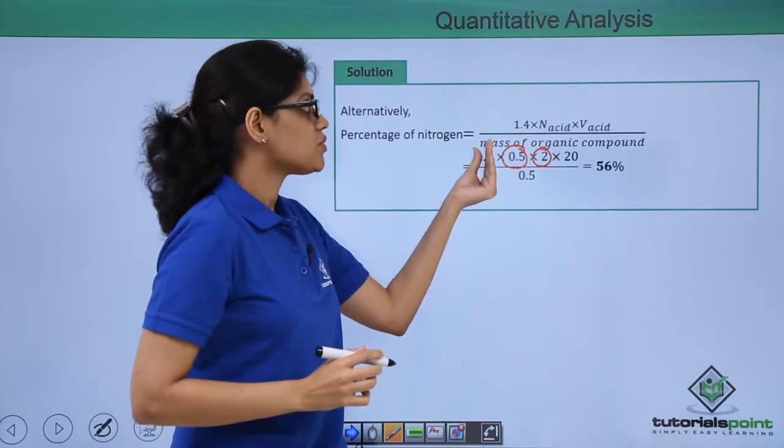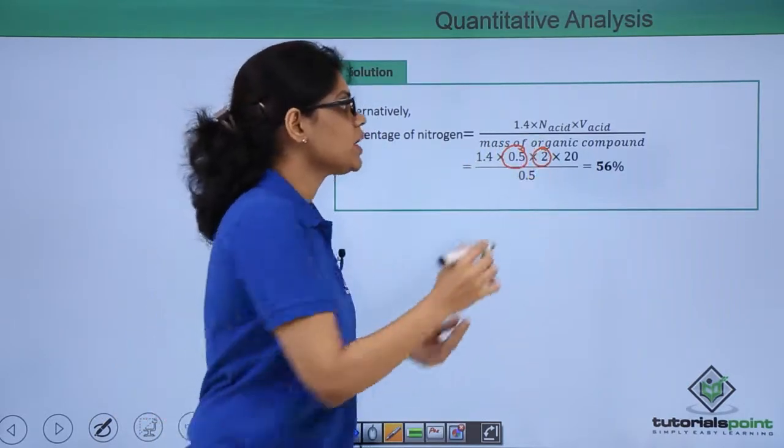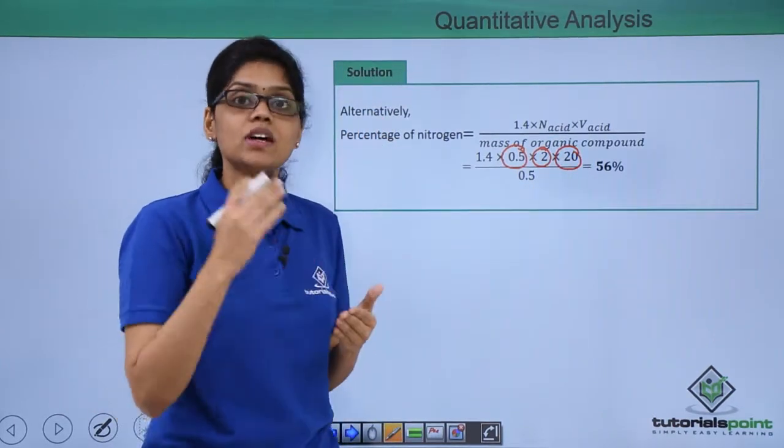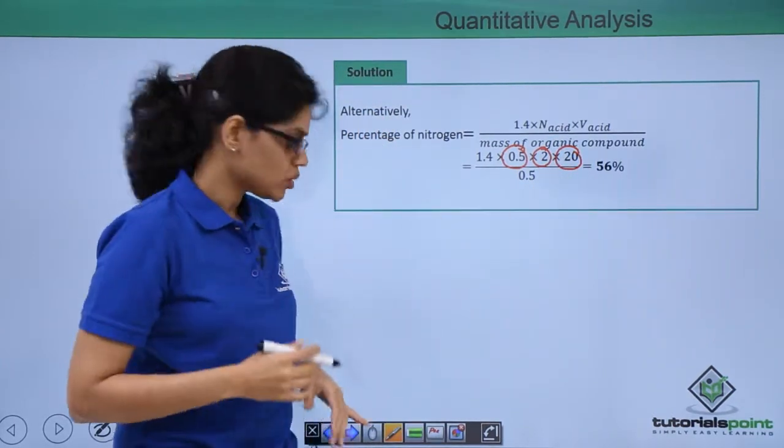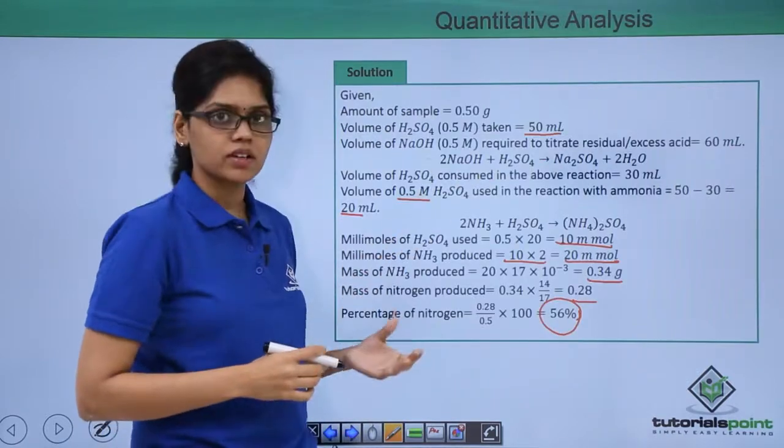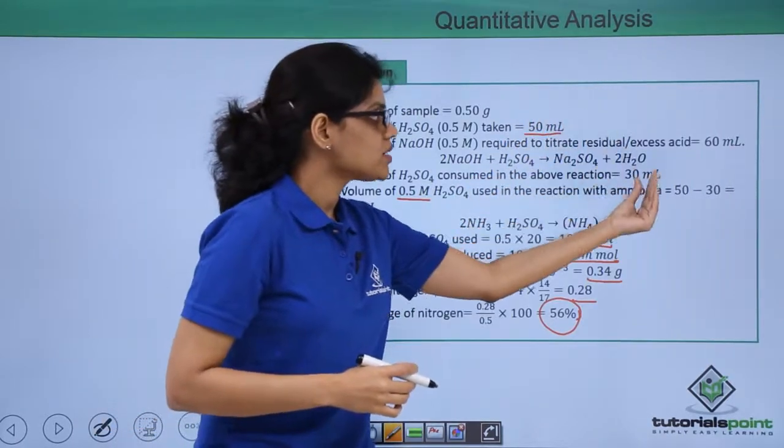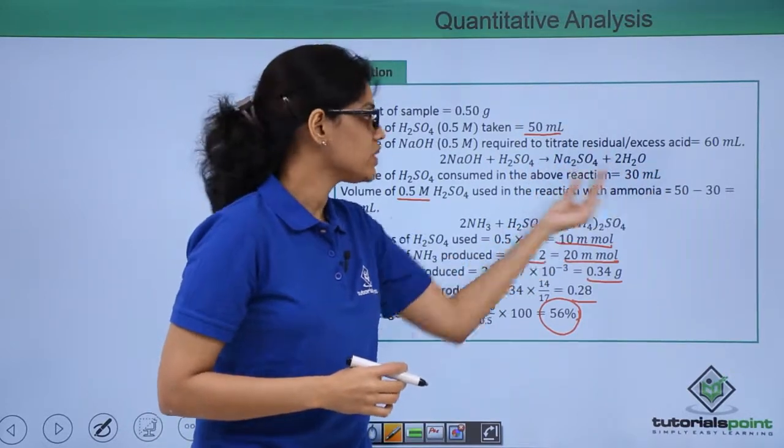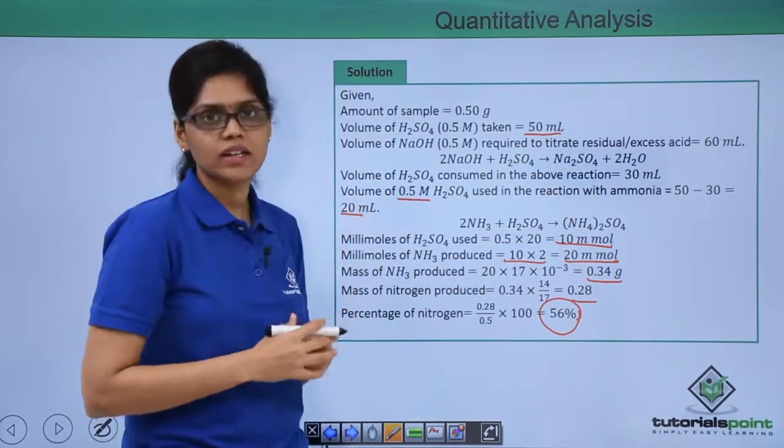So 1.4 into 0.5 into 2 and 20 ml of acid is consumed in the reaction with ammonia, which is 50 minus 30 ml of sulfuric acid consumed in the titration reaction, that will give us 50 minus 30 that is 20 ml.